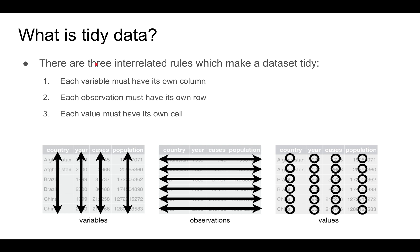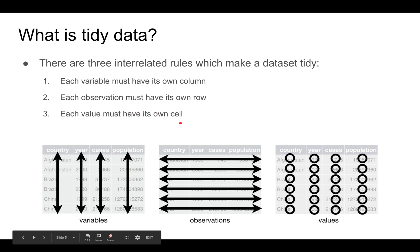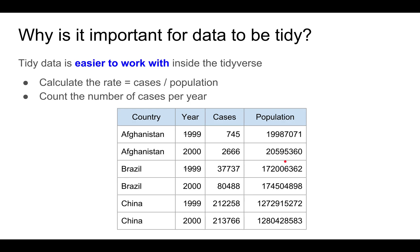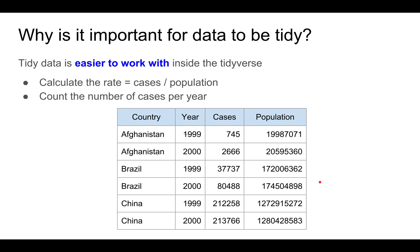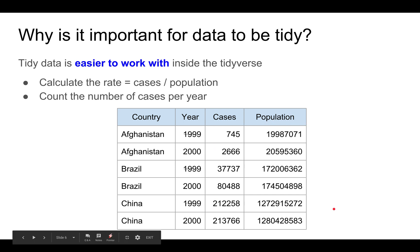Basically, tidy data follows three rules. First, each variable must have its own column. Second, each observation must have its own row. And thirdly, each value should have a single cell. It's important for data to be tidy because it's much easier to work with inside the Tidyverse. For example, if the data is tidy, it's very easy to use mutate to compute the rate of a disease, or to count the number of cases per year. And you'll see that in the lecture scripts later.